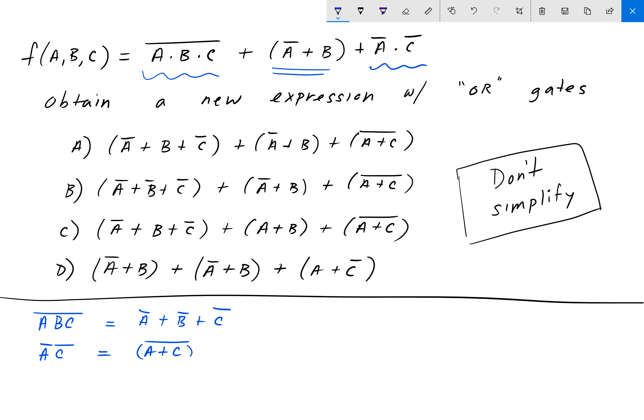And then that's it. I mean we combine the terms for the expression. So f(A,B,C) is equal to A' plus B' plus C' which is the first term, plus we leave the second term untouched, and then the last term, the third term, is just (A plus C)'.